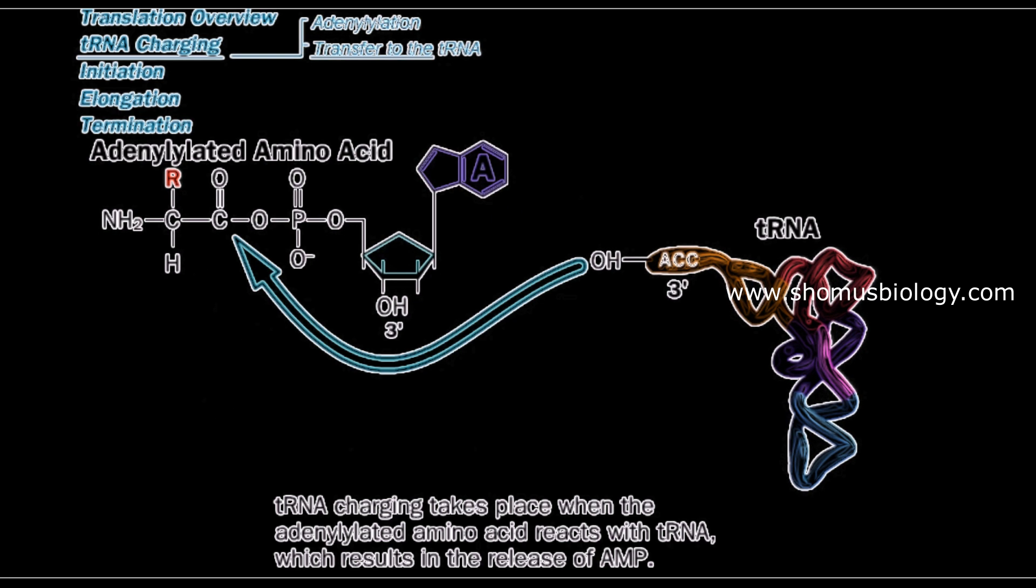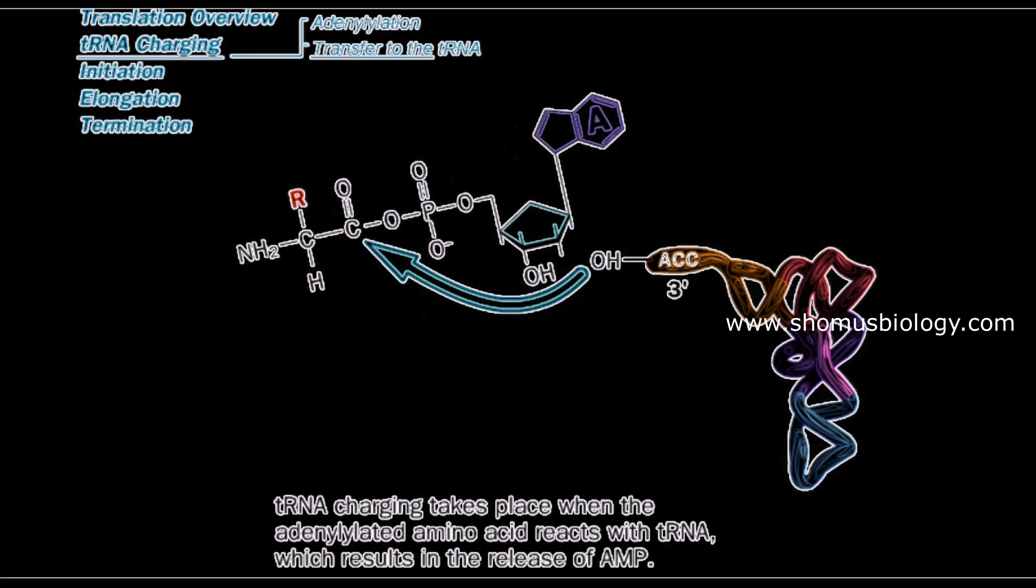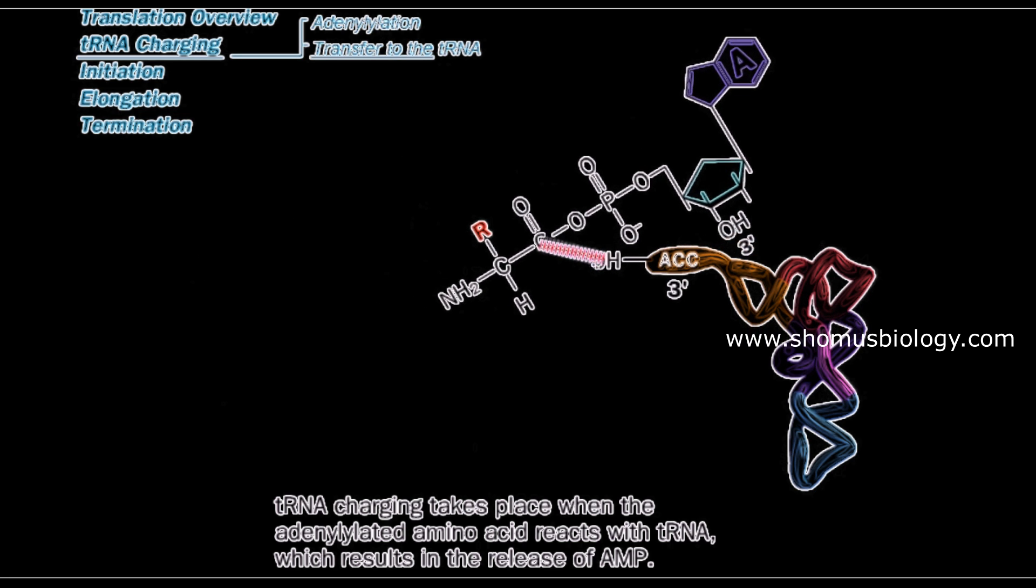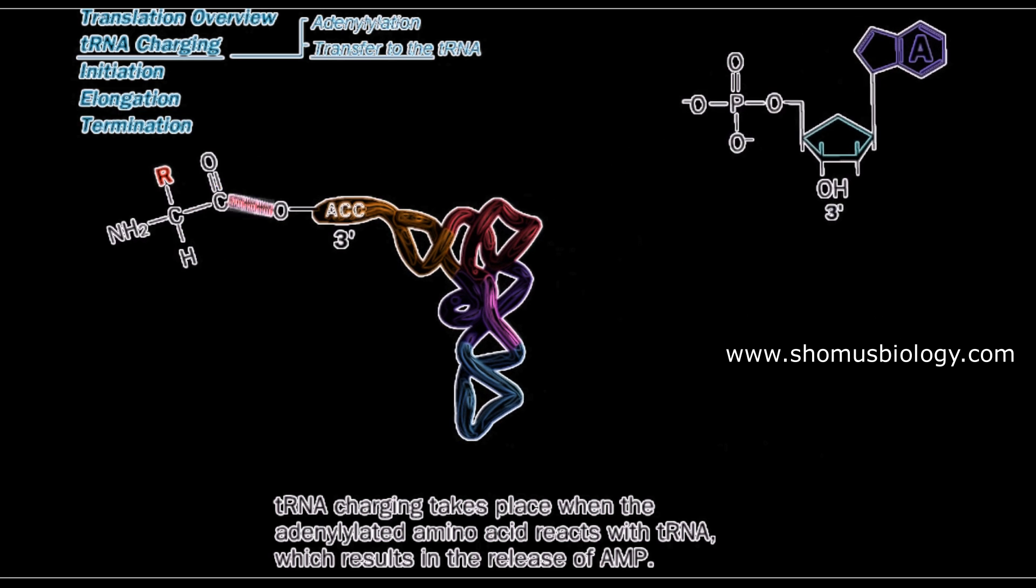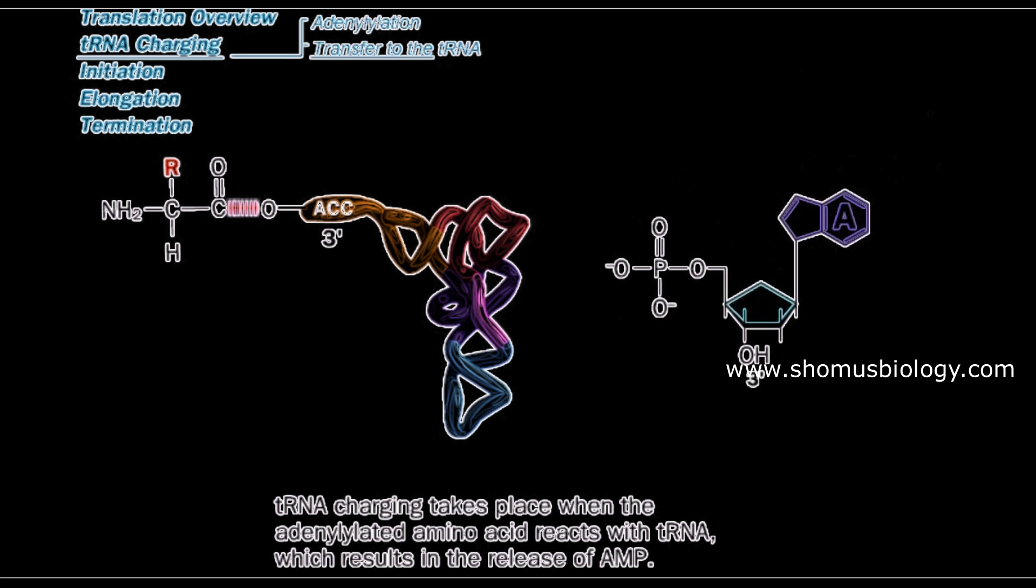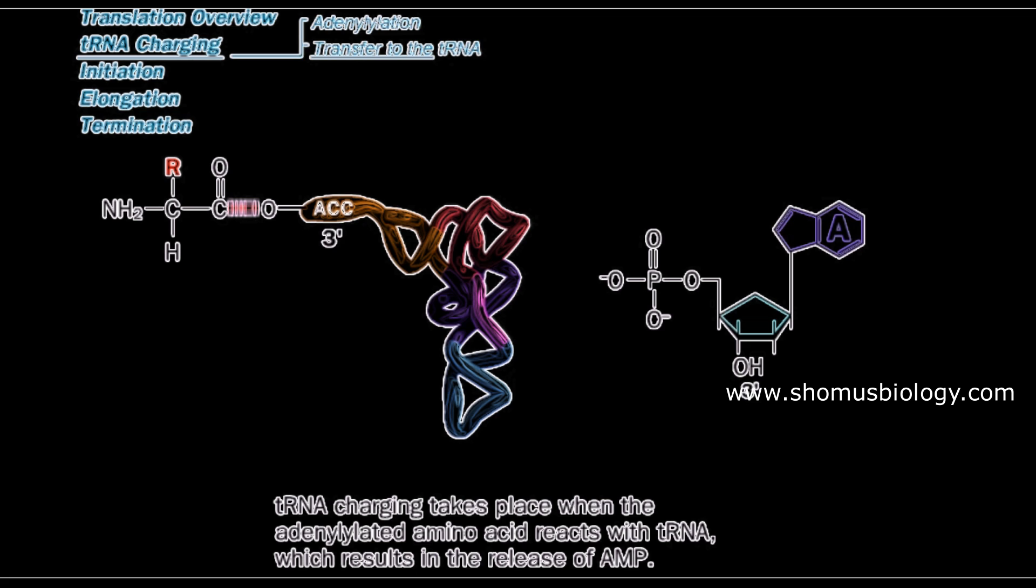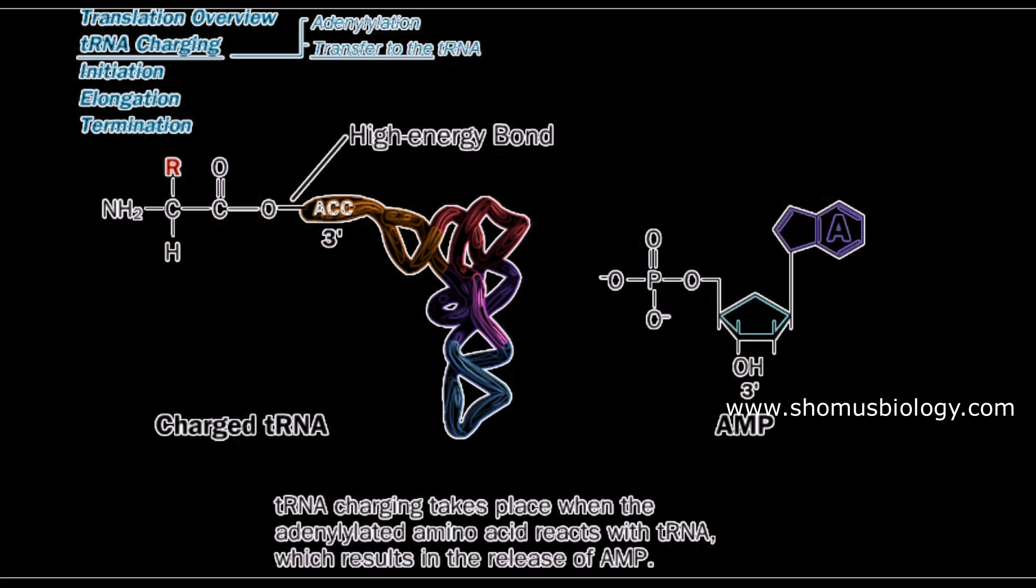Then the adenylated form of amino acid transfers itself to the 3' hydroxyl ACC arm of the tRNA. This is another interaction, and that's how the tRNA is charged. We call this state of the tRNA a charged tRNA. It's a very important two-step process.